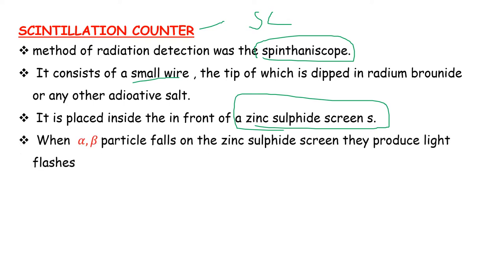When alpha-beta particles fall on the zinc sulfide screen, they produce light flashes. Alpha-beta particles on the zinc sulfide screen produce light flashes which can be seen by microscope in a dark room.